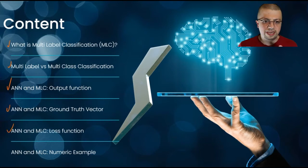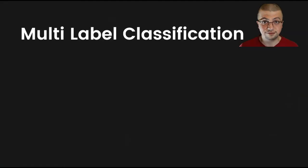And finally we'll provide you with a numeric example as to how in practice you could actually do a forward pass and a backward pass in an artificial neural network to solve a multi-label classification problem. So without further ado, let's talk about multi-label classification.